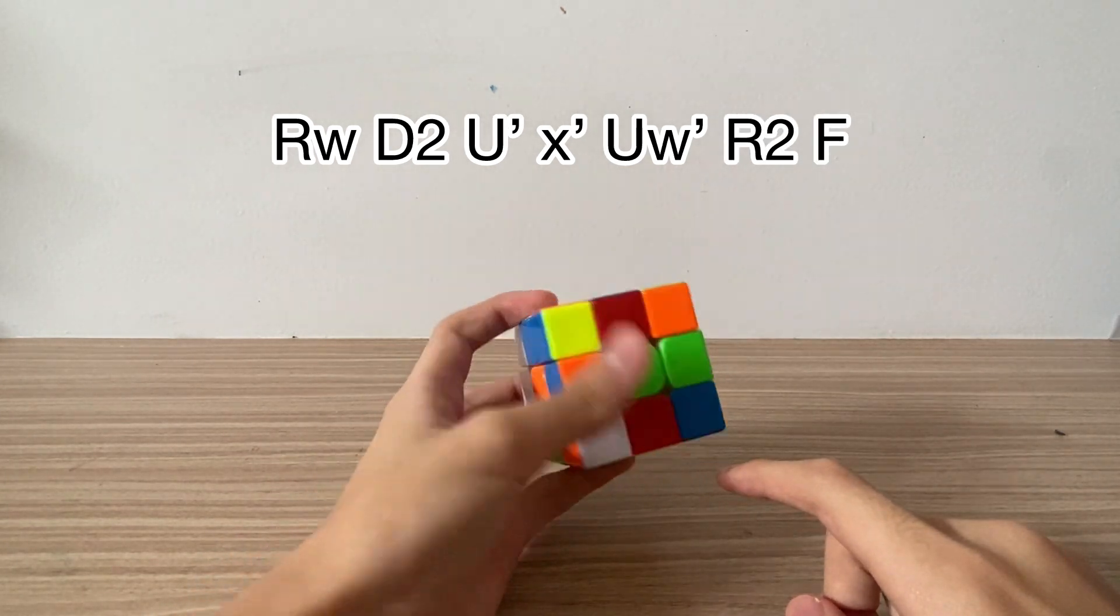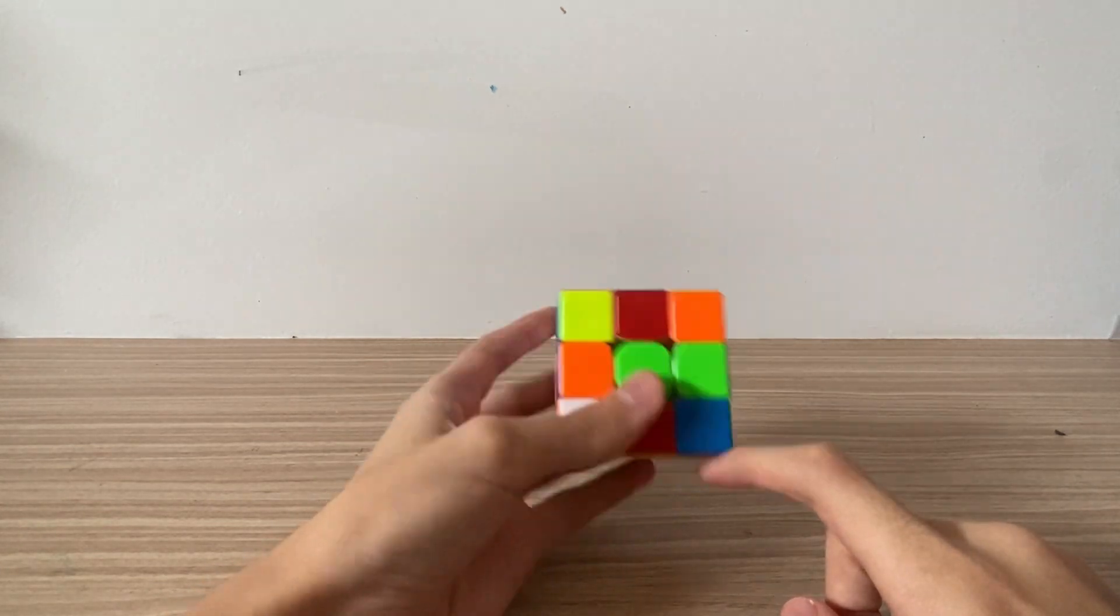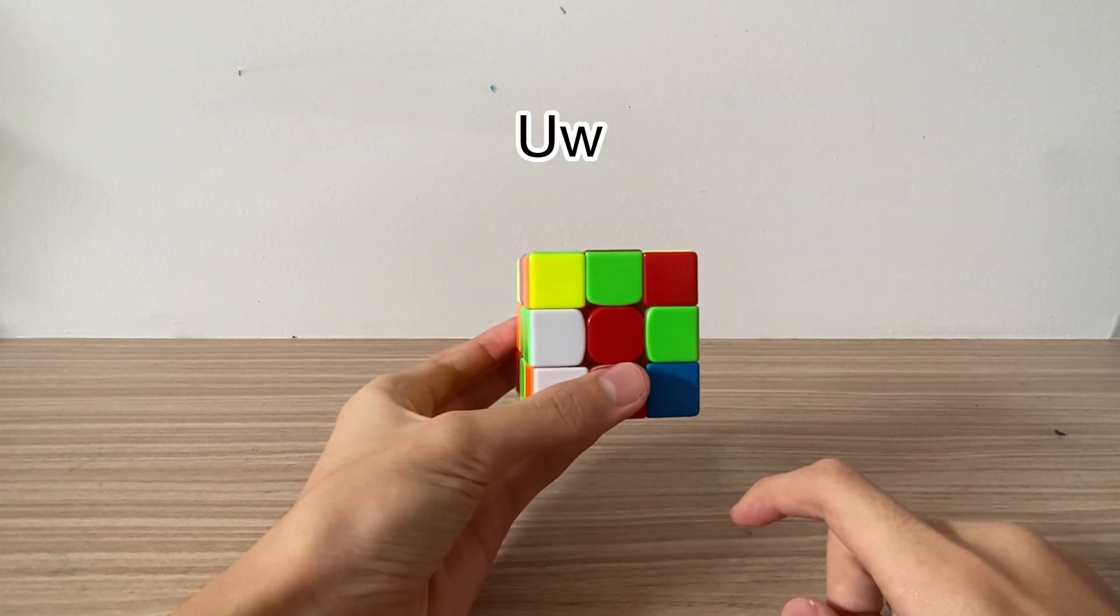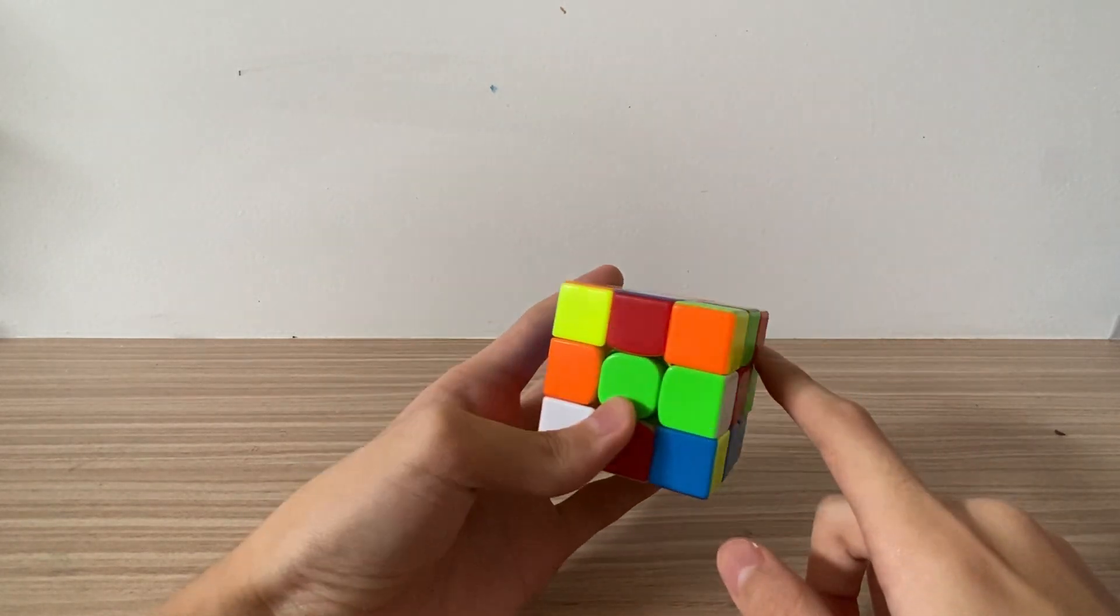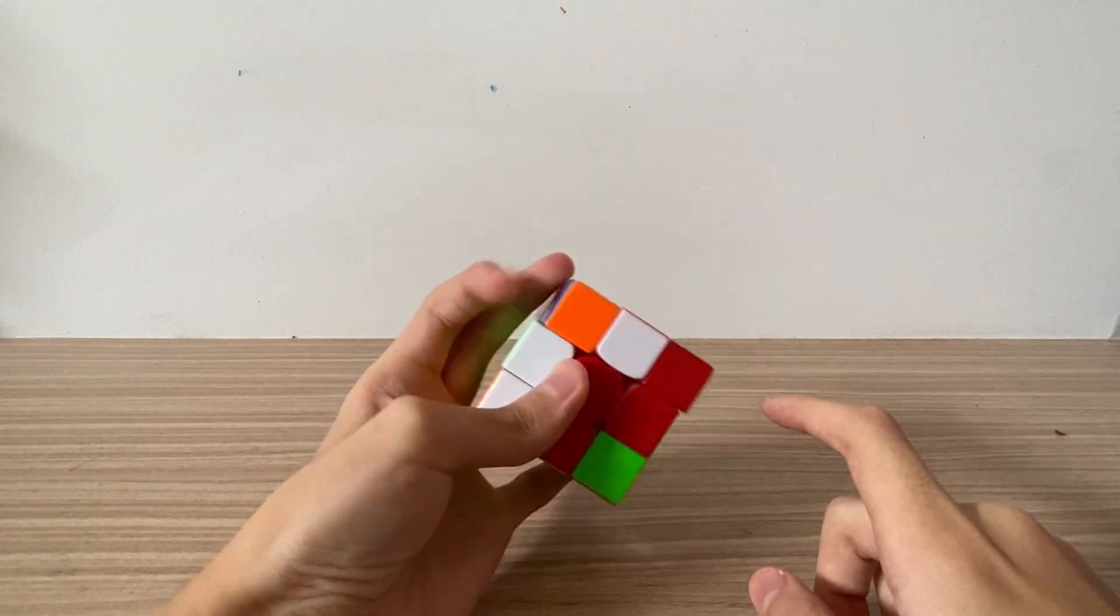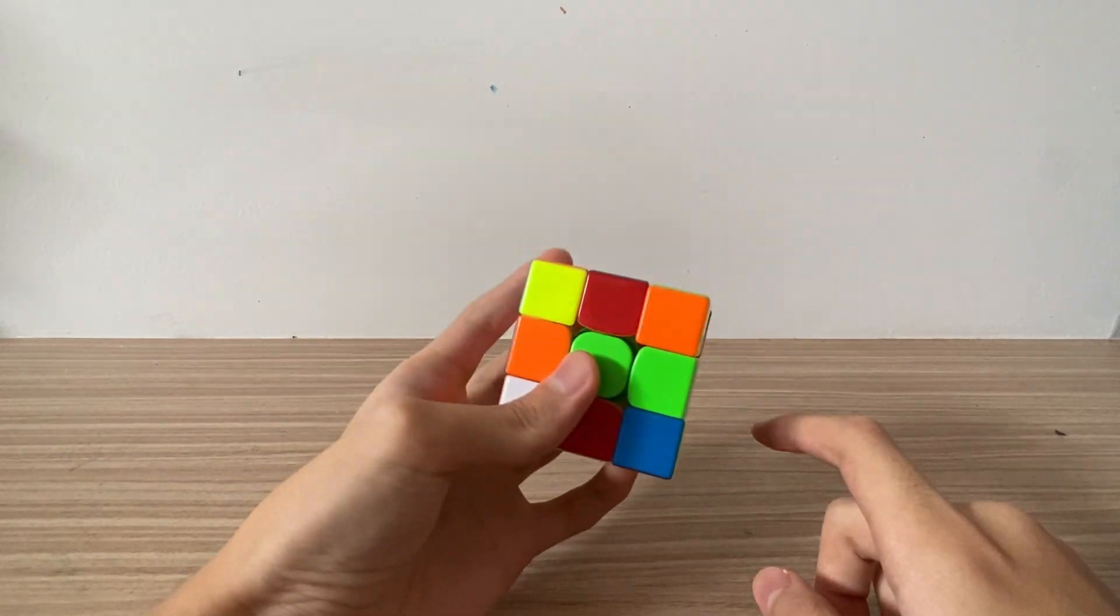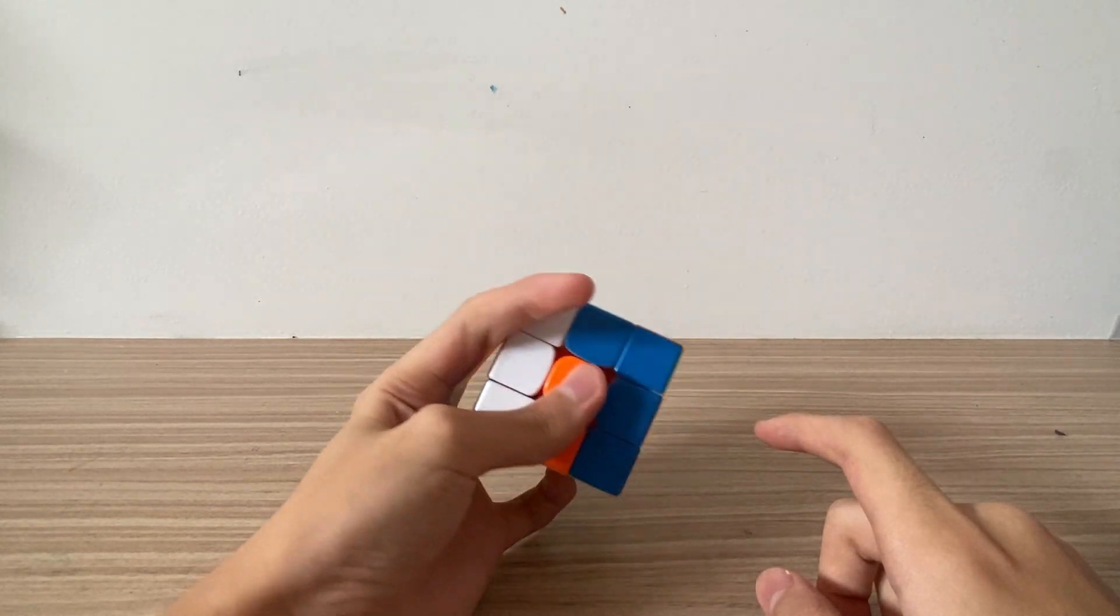Now to realign the cross, there are two options you can do. You can do a U wide move or a D. So I'm looking ahead to this pair now. If I do a U wide, I will not have to do any rotations. But if I do a D, I will need to rotate over here, which is not good.